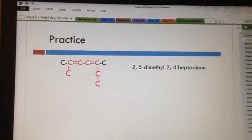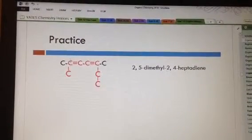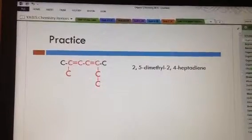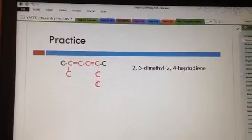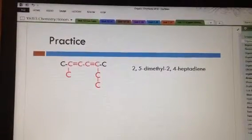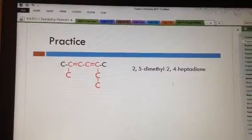And where are they, those dienes? If I count starting at this carbon, they are at 1, 2, 3, 4, at 2 and 4. And if I count this direction, they would have been at 1, 2, 3 and 5. Since 2 and 4 are less than 3 and 5, it is a 2, 4 heptadiene.